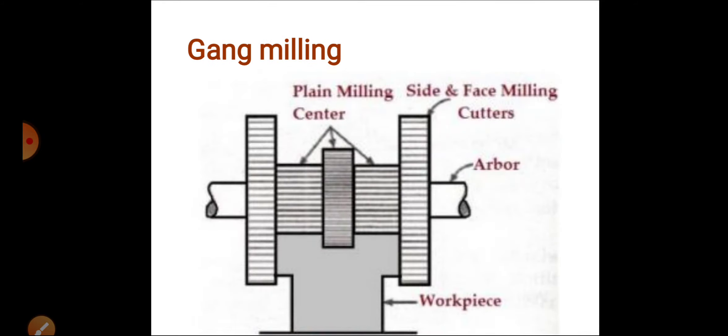Next is gang milling. In gang milling, we have more than two cutters which are mounted on a common arbor. One arbor with multiple cutters - more than two cutters. That is gang milling.